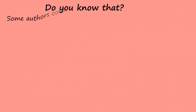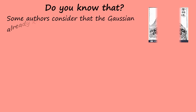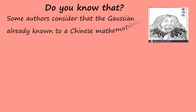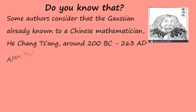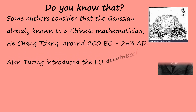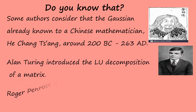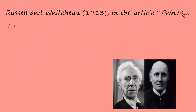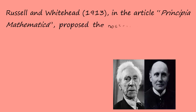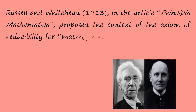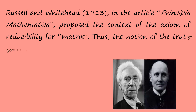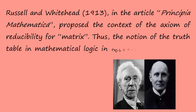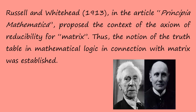Some authors consider that Gaussian elimination was already known to a Chinese mathematician, Shang, around 200 to 360 AD. Alan Turing introduced the LU decomposition of a matrix. Roger and Penrose developed the theory of generalized inverse matrices. Russell and Whitehead, in 1913, proposed the context of the axioms of reducibility for matrix. Therefore, the notion of the truth table in mathematical logic in connection with matrix was established.